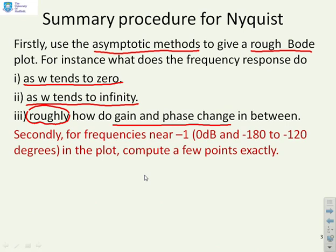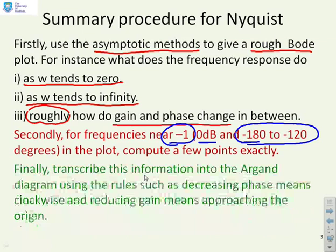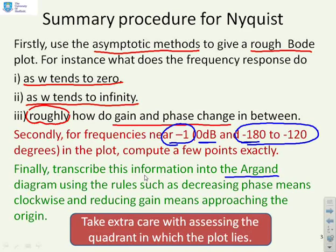Next, you might want to ask questions about what happens near the minus one point, which is zero decibels at minus 180 degrees. You might also be interested in the range minus 180 to minus 120 degrees, and it's often quite useful to have a couple of precise points to make sure the plot is accurate enough in that region. Finally, you transcribe this information into the Argand diagram using trending rules such as decreasing phase means moving clockwise, and reducing gain means approaching the origin. Take extra care assessing the quadrant, as getting it correct is critical for loop analysis.